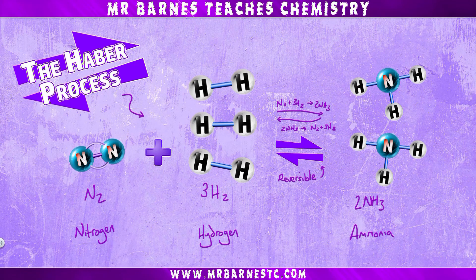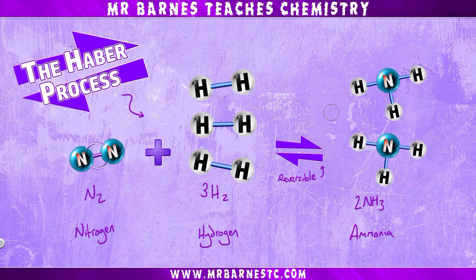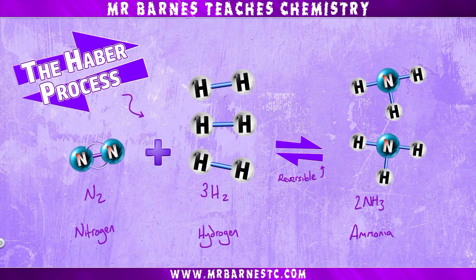The whole point of the Haber process is to make ammonia, and the reason we want that is to make fertilizers. Naturally you want to get as high a yield and as much ammonia as possible, so scientists have to find a way to speed up the reaction whilst getting as big a yield as possible — lots of it and as quickly as possible.